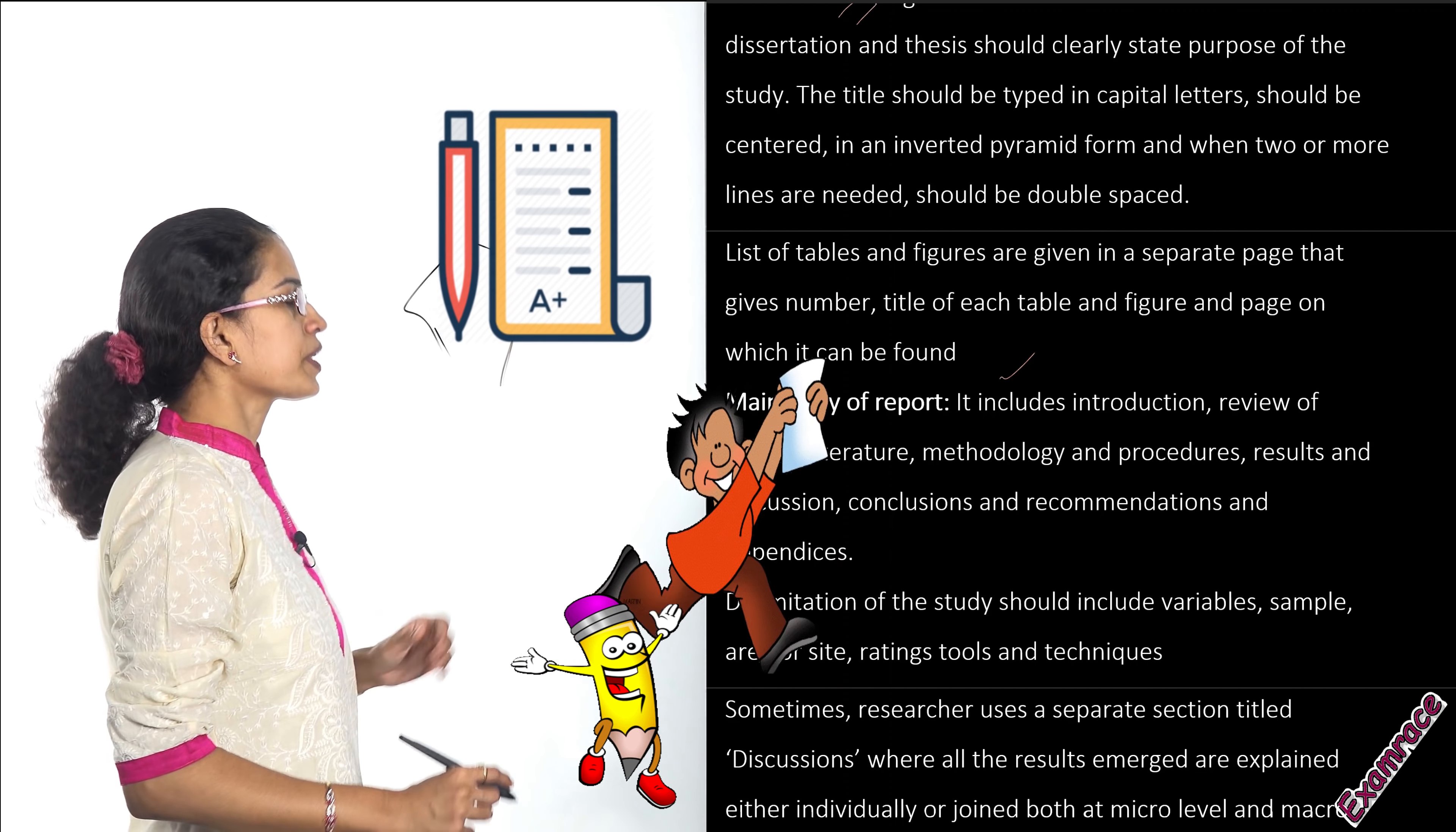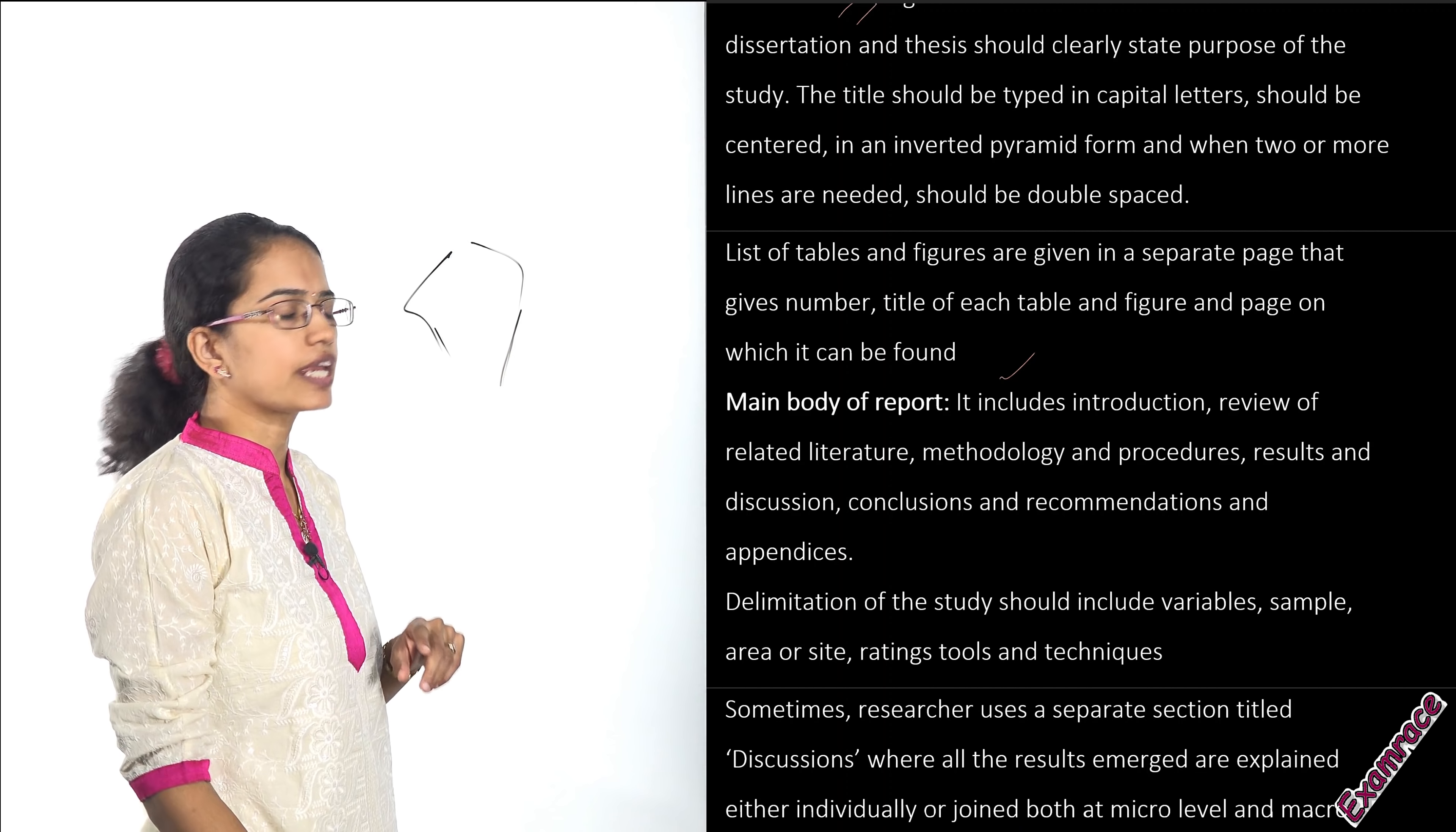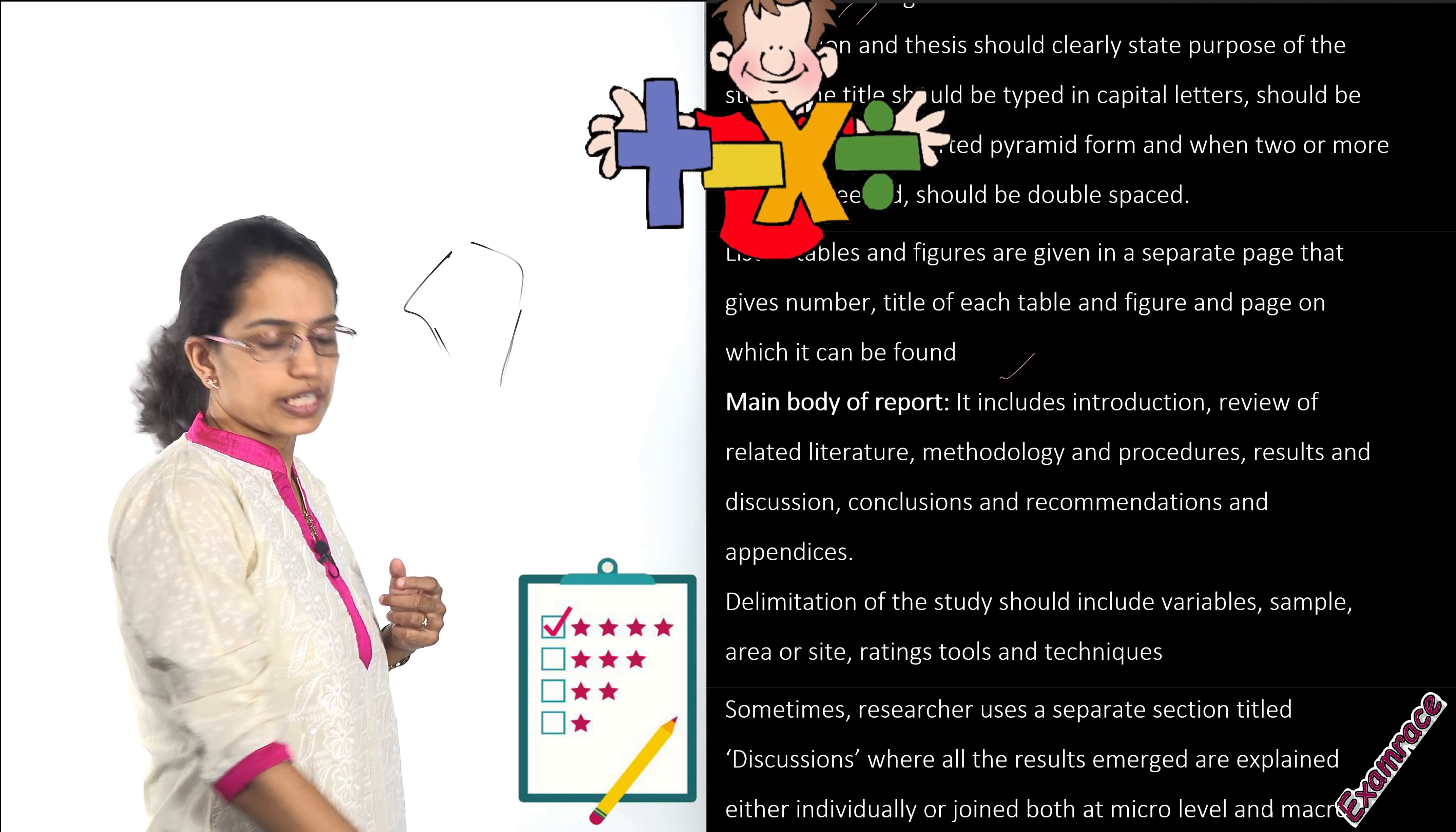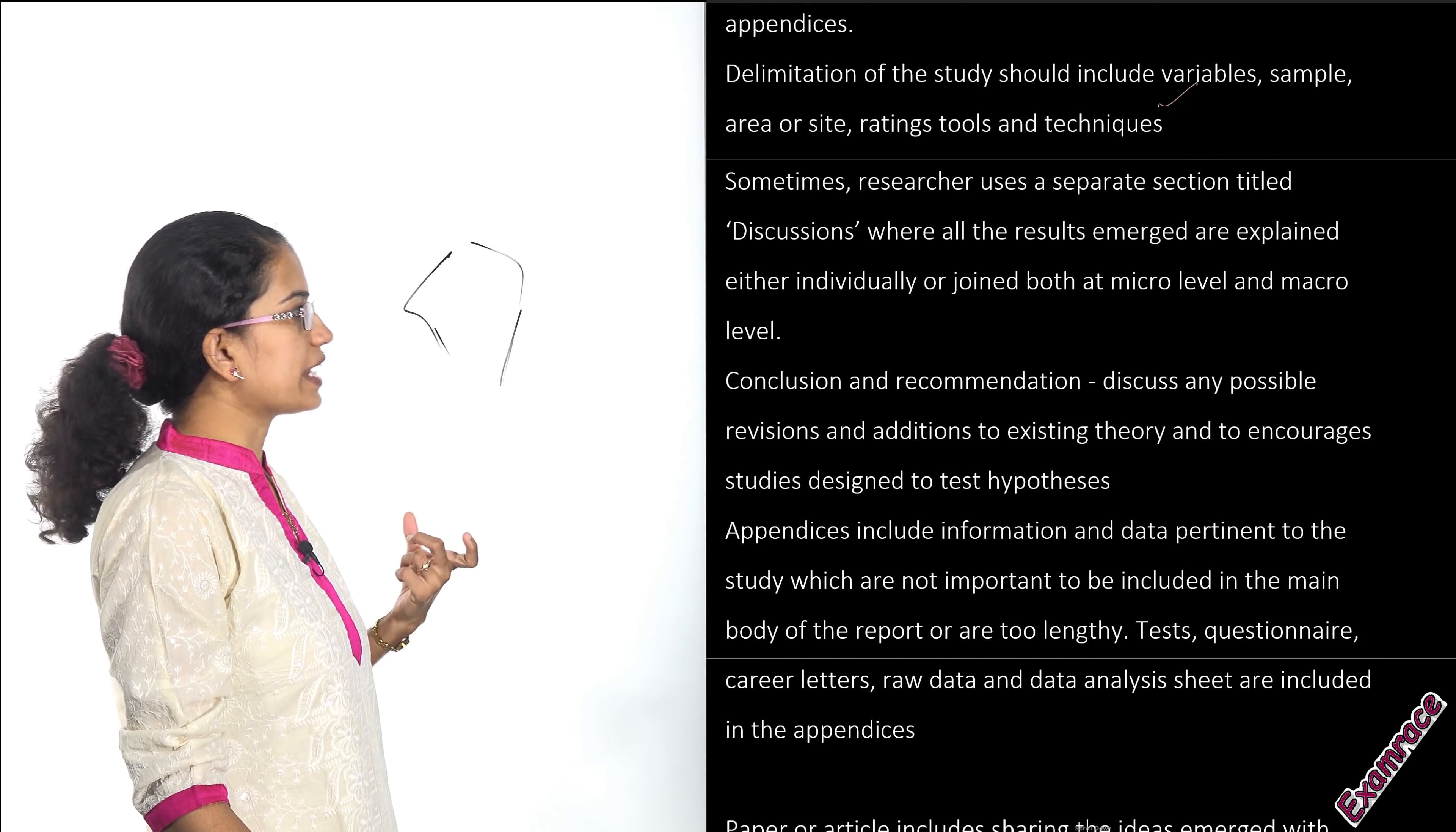Then you include the delimitations. Delimitation means the sample size that you are trying to take, the area that you are trying to cover, any variables that are to be included, the rating tools and the techniques. A very important term is the discussion, which explains the results in a more detailed form.